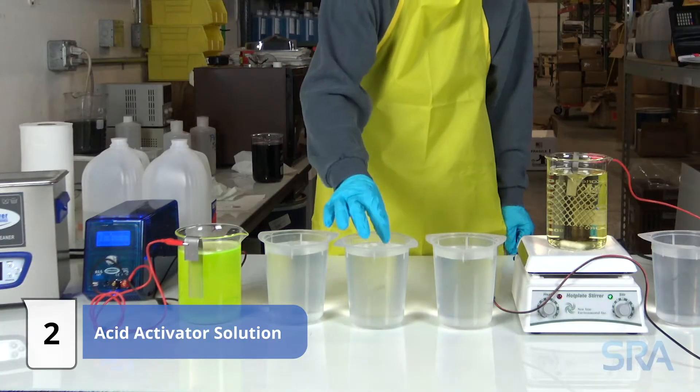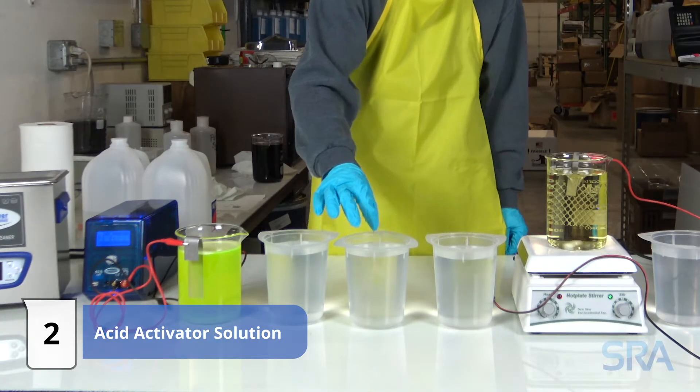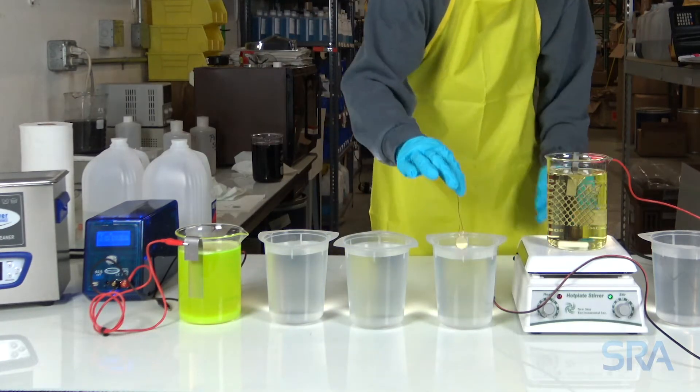Next, acid activate for a few seconds and follow it up with another distilled water rinse. This will neutralize the electro cleaner soap.